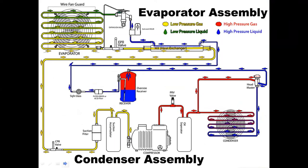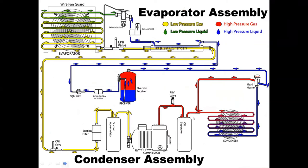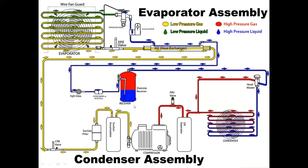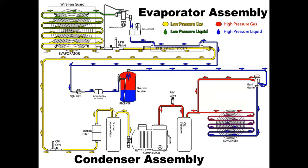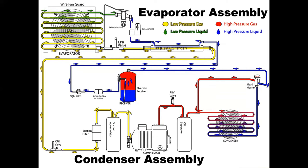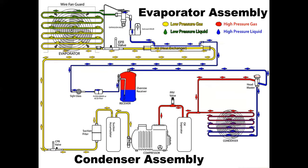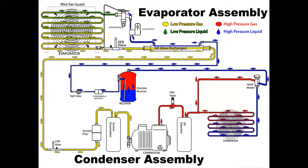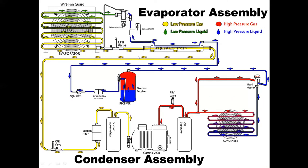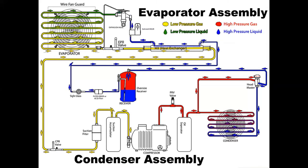This is the refrigeration cycle where you can see it has many parts. The major parts are the evaporator, condenser, compressor, and expansion valve — these four are the major parts without which no refrigeration cycle can work. But apart from these, there are other components like the oil separator, which prevents carrier oil from reaching refrigeration equipment, and the suction accumulator, which prevents liquid from reaching the compressor. All parts — receiver, sight glass — play a vital role.